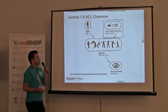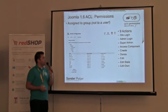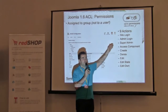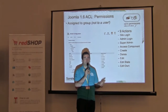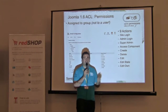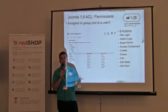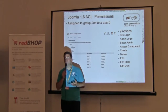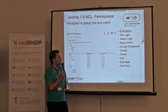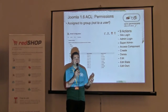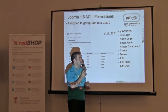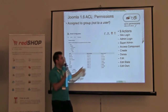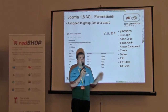Then we have the core permissions — what can be done. There are nine actions: site login (ability to log in on the front end), admin login (ability to access the back end), super admin (ability to configure an extension), access component (ability to access a component, item, or category), and five more item-level actions: create, delete, edit, edit state, and edit own.